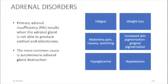Moving on to adrenal disorders. Primary adrenal insufficiency results from the adrenal gland's inability to produce cortisol or aldosterone, most commonly due to autoimmune destruction of the adrenal gland. This can lead to fatigue, weight loss, abdominal pain, nausea, vomiting, increased skin pigmentation, gingival pigmentation, hypoglycemia, and hypertension.